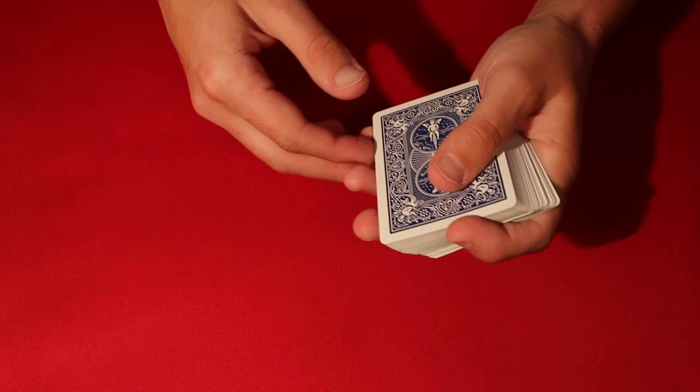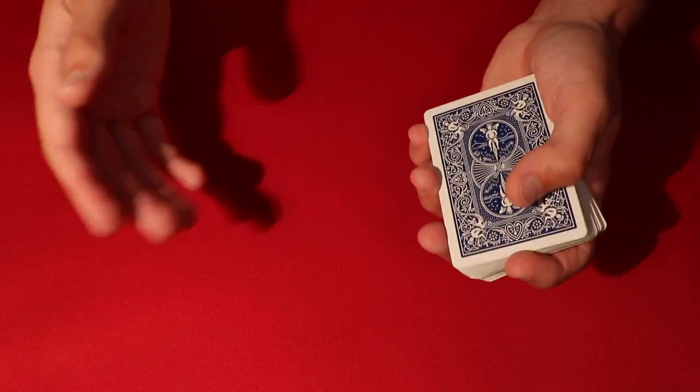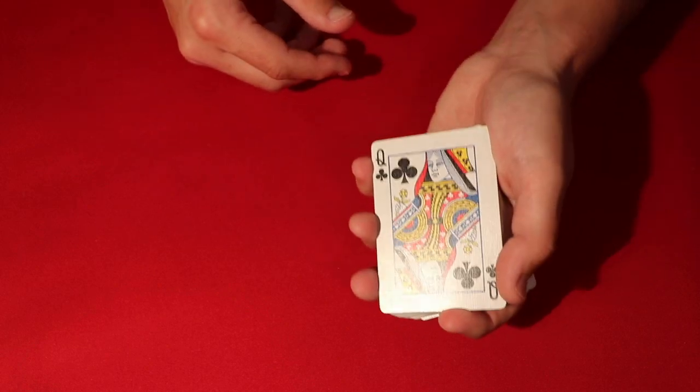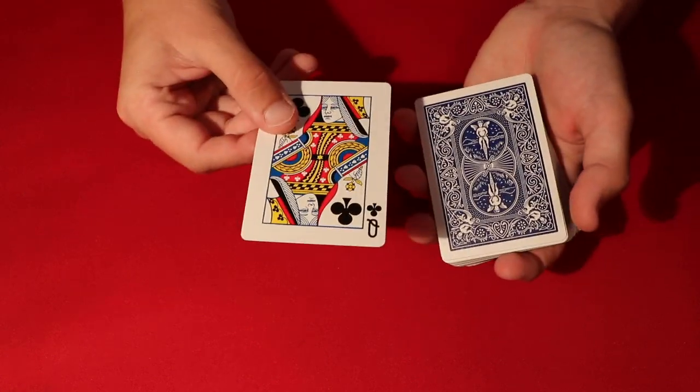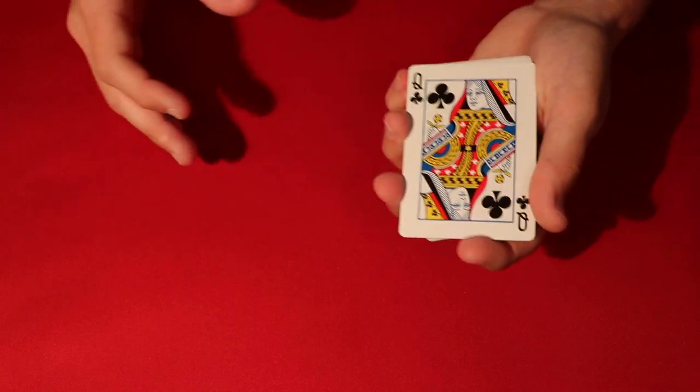you do a double lift. Or actually, no, sorry, you do a single lift. So you flip it over, and it's not the seven of spades. So you flip it over, just one card, and you say, actually, hold on, let me see, let me see something. Maybe the card is underneath the table.